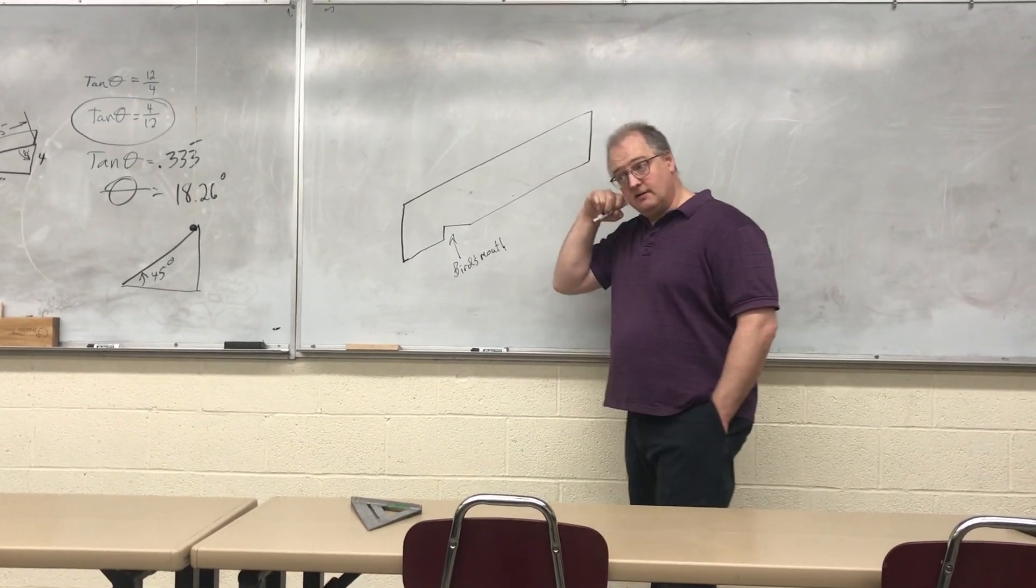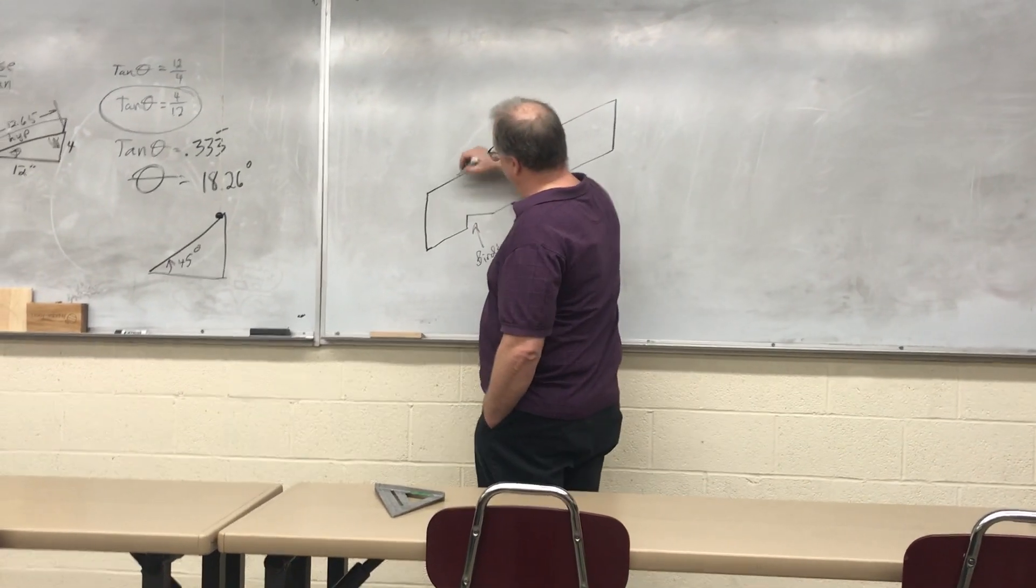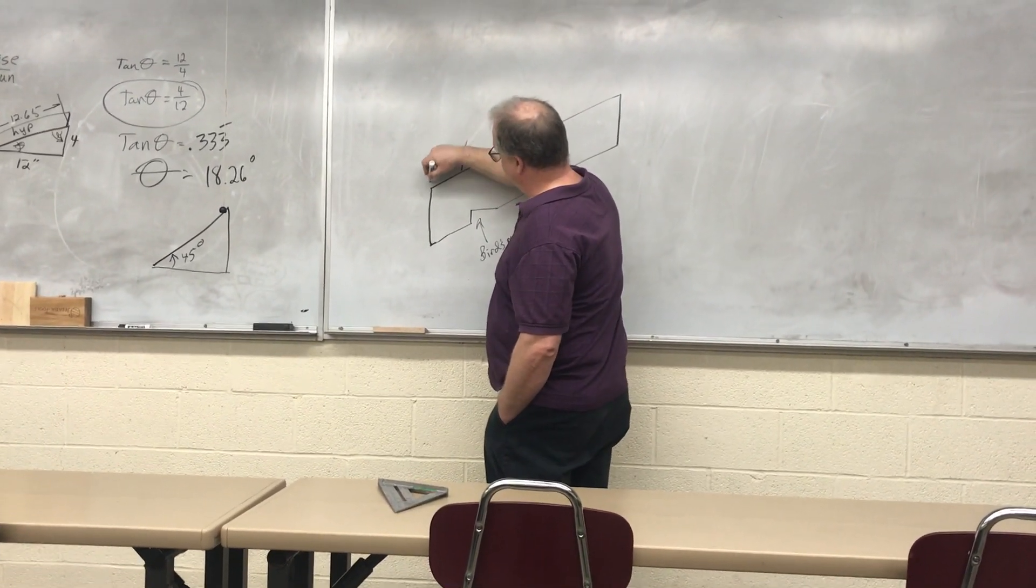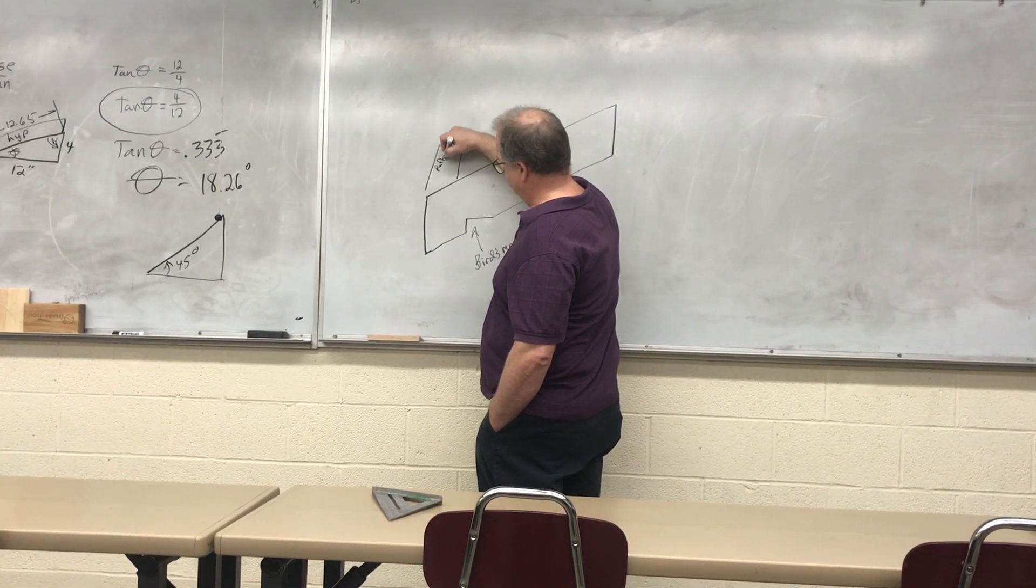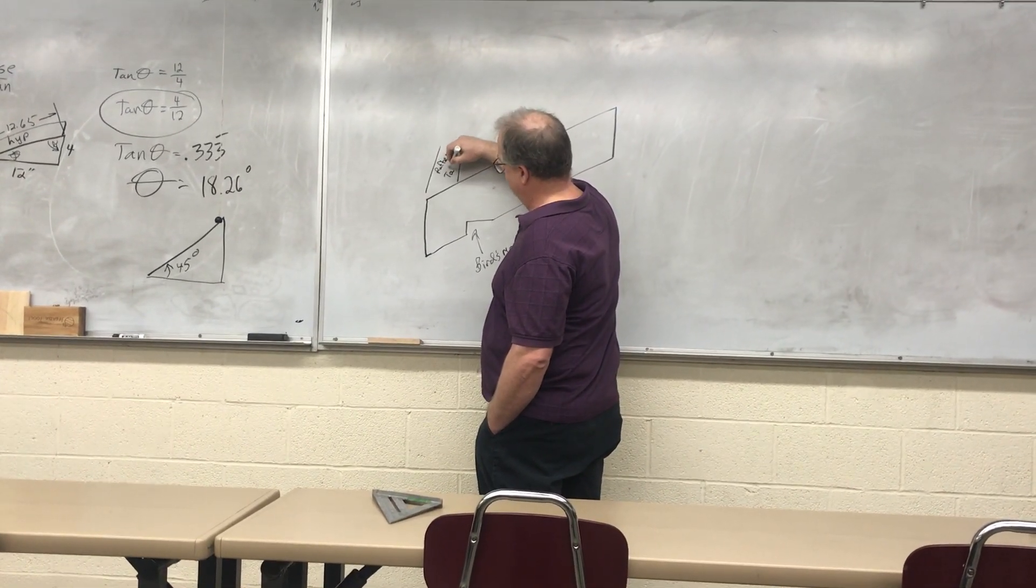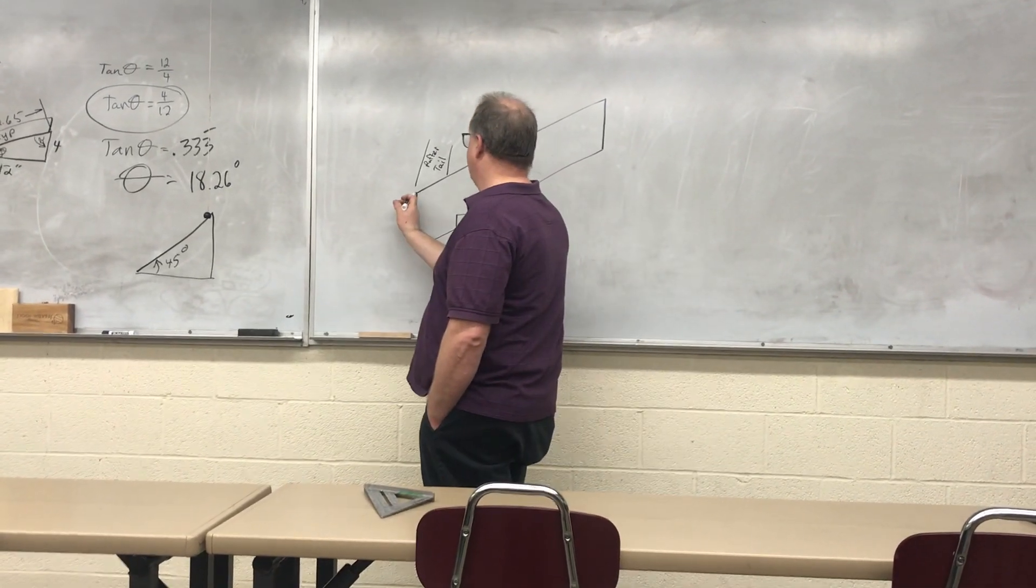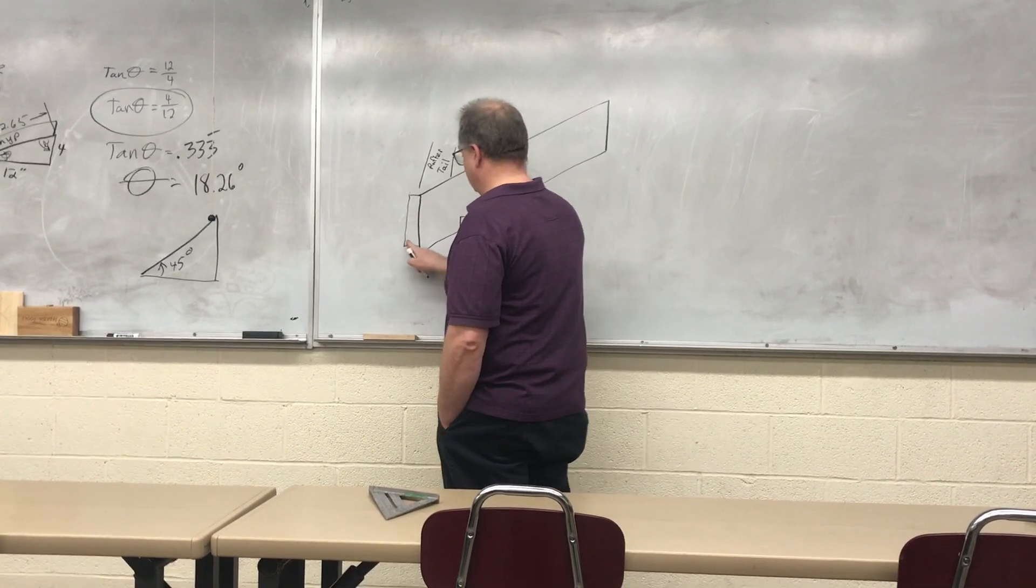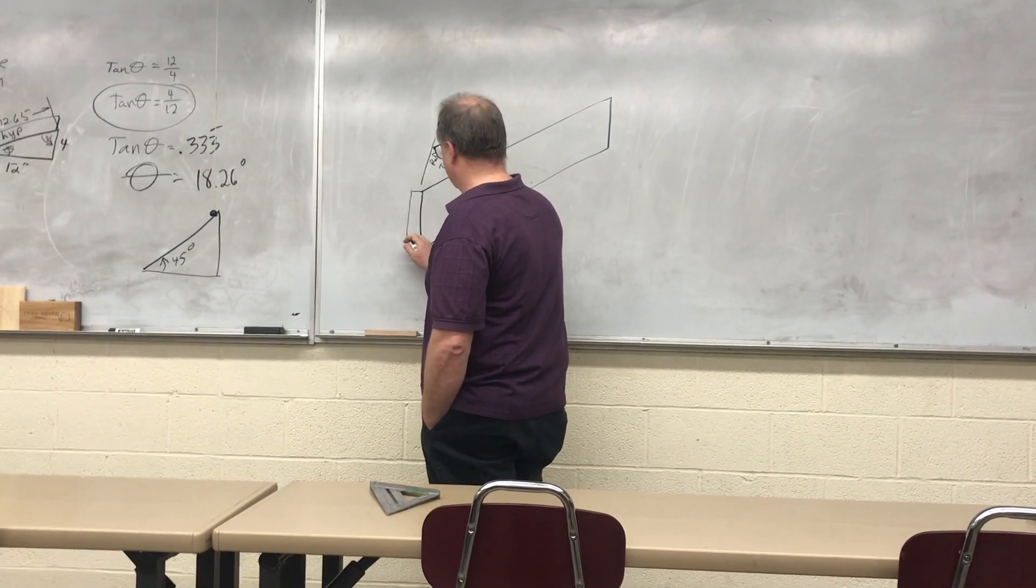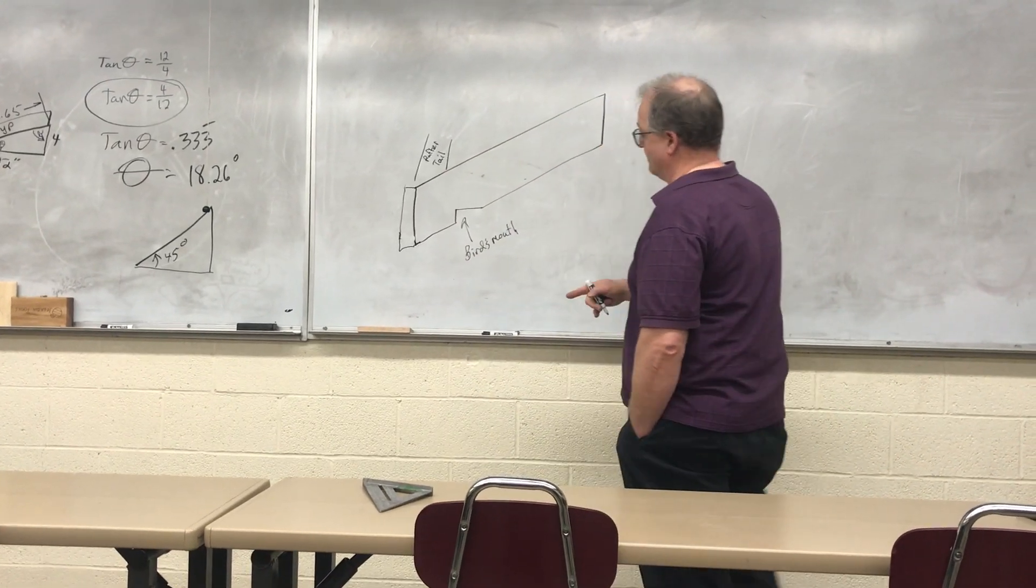It's very important for the rafter. So from here over to there, that's called the rafter tail. And on this part, usually we also have our soffit there as well to kind of cap off the total of the rafters. We'll talk more about that.